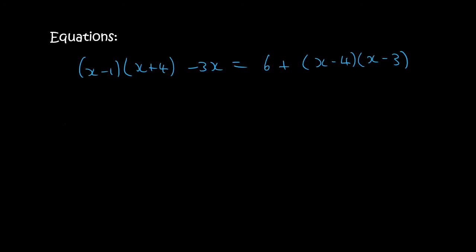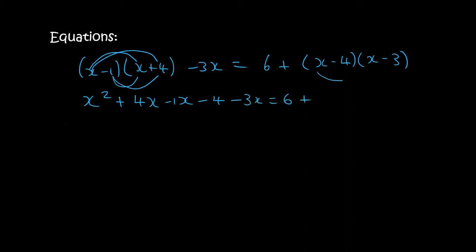Here's another one. We want to get rid of these brackets. So x times x is x squared, x times 4 is 4x, minus 1 times x is minus x, and minus 1 times 4 is minus 4. For the other bracket, that's x squared minus 3x minus 4x plus 12.